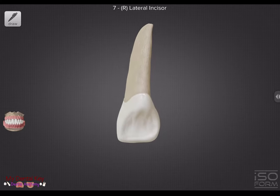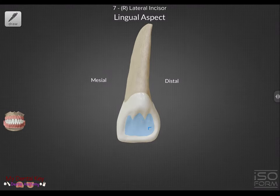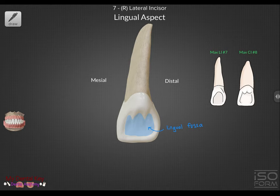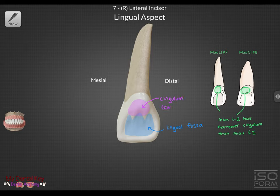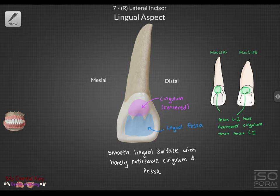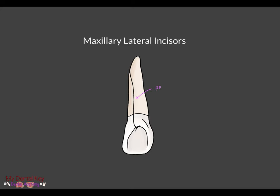Looking at the lingual, the lateral incisors have the most developed lingual anatomy of all anterior teeth. The cingulum is more narrow on the lateral compared to the central incisor, and it's in the middle of the lingual surface. This surface is the smoothest and you'll barely notice the lingual fossa or the cingulum. A clinical note: the palatal radicular groove and lingual pits are potential areas for caries development.